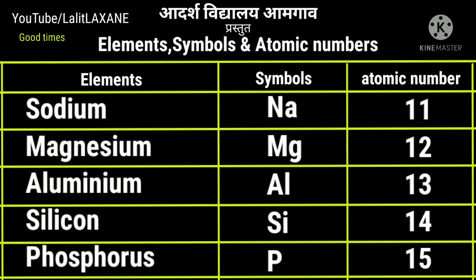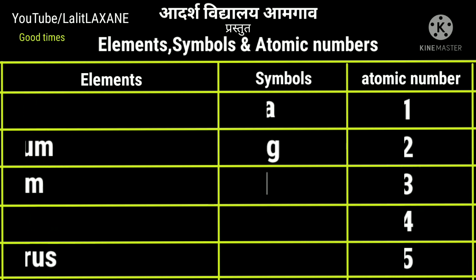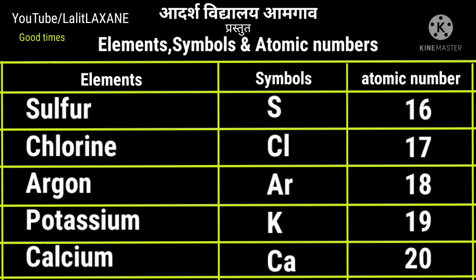With atomic number 11, there is sodium with symbol Na, which stands for natrium. Then magnesium Mg with atomic number 12. Aluminium Al, 13. Silicon Si, 14. Phosphorous P with atomic number 15. Then sulfur with symbol S and atomic number 16.